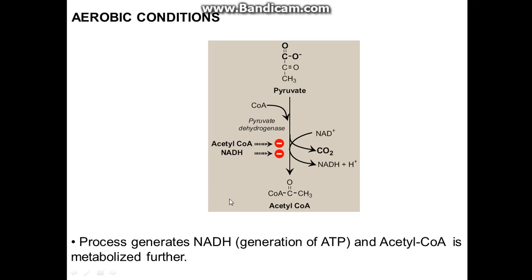The process generates NADH, which is used to generate ATP later on, and acetyl-CoA is metabolized further. Generally it will go to the tricarboxylic acid cycle, but it can also lead to things such as fatty acid metabolism or amino acid synthesis — alanine, for example.